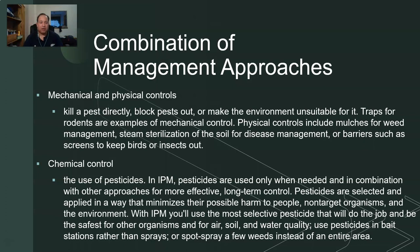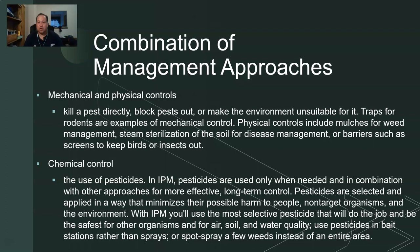Chemical controls are where we're actually talking about the use of pesticides. Within pesticides we have subcategories like herbicides, fungicides, rodenticides, and all sorts of different chemicals targeted to reduce certain pest populations. Pesticides should be selected and applied in a way that minimizes possible harm to people, non-target organisms, and the environment. When we're talking about management, the biggest thing we're trying to accomplish is to not hurt anything except our desired targeted pest.